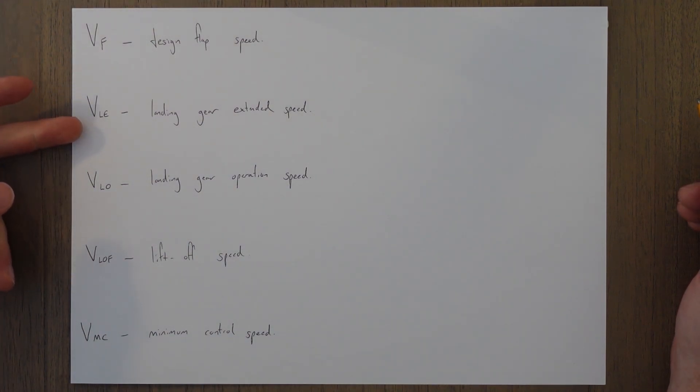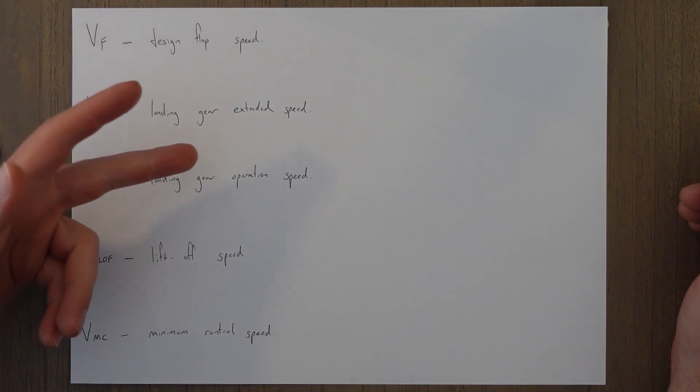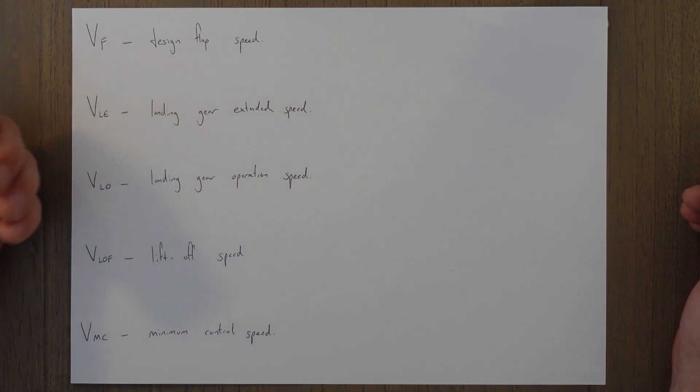VLE is the maximum speed for the landing gear extended. This is the maximum speed at which a retractable gear aircraft should be flown with the landing gear down and extended.